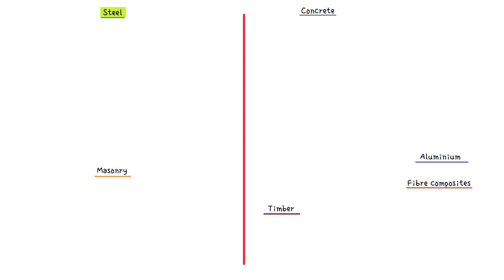Let's begin with steel. Iron ore is the basic raw material for steel, which is first converted to pig iron. This has both iron and carbon in it. Steel is then made by reducing the percentage of carbon. The amount of carbon remaining, and other factors such as the rate of cooling, have a significant impact on the properties of the finished steel. Good quality control is required to produce a consistent and reliable steel for structural purposes.